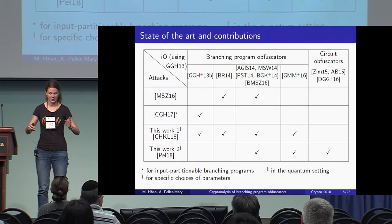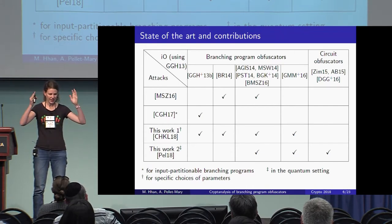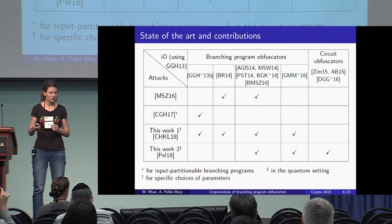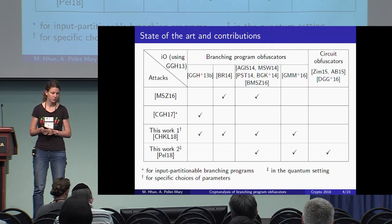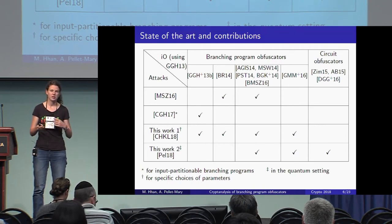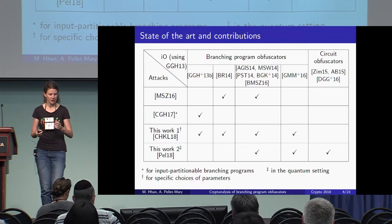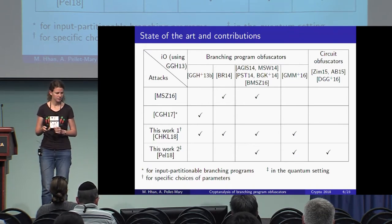More recently, there was a new attack on the first candidate obfuscator, which works only for specific types of input, and a fix was proposed to try to prevent it. To sum up: we are going to describe the two last lines of the table. The first attack works against all branching program obfuscators — including the GMM+ obfuscator not previously attacked — but only in a specific regime of parameters. The second attack works only for more recent branching program obfuscators and circuit obfuscators, but only in the quantum setting.